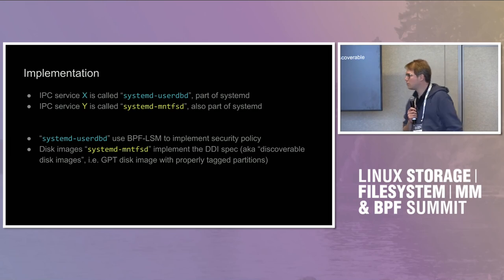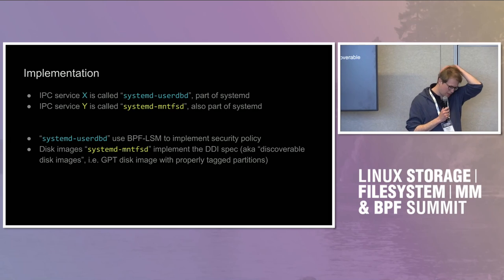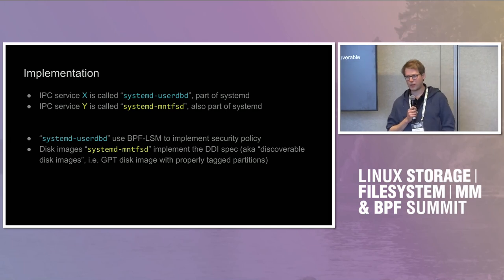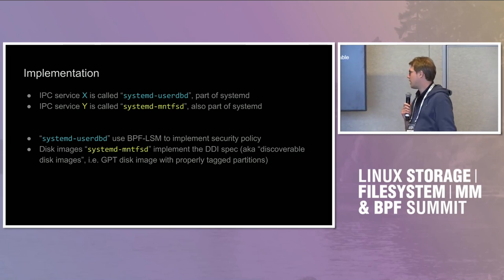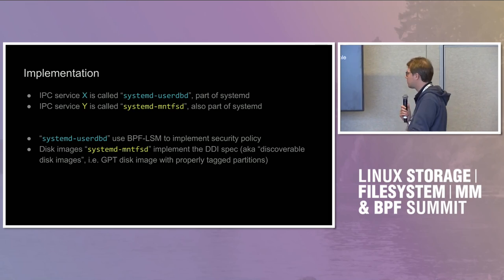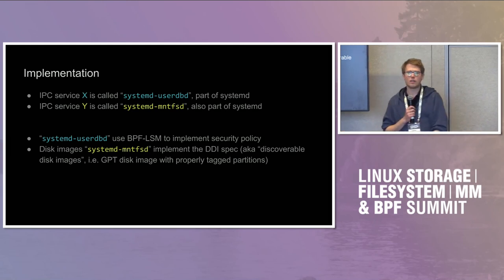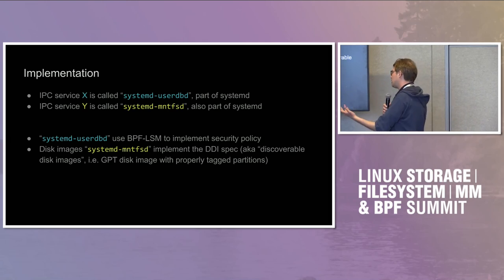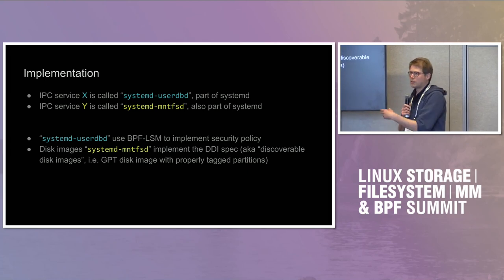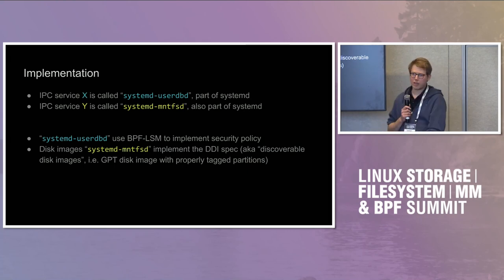The disk images that systemd-mountfsd implements follow the DDI spec — we need DM-Verity in them. So the way this works: give us a GPT disk image with a partition table, two partitions — the Verity partition and the actual file system — plus a third one containing the signature for the root-level hash. We pass the root-level hash with its signature to the kernel. The kernel verifies that against the kernel keyring, we get the DM-Verity device set up, we mount it, we apply the UID map, and give it back to the client.